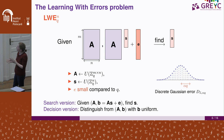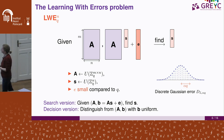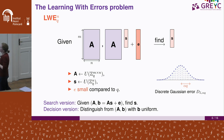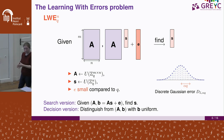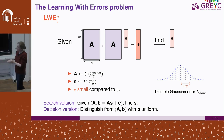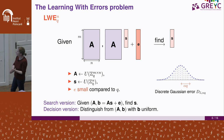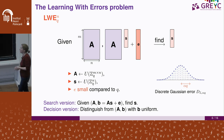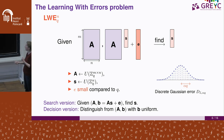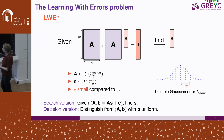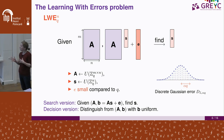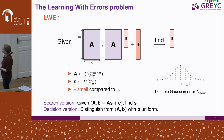There are two variants of this problem. The search version: given A and B = A·S + E, find the secret S. The decision version: given A and B, determine whether B = A·S + E for some secret S and error E, or whether B is itself uniform. These two versions are equivalent — there is an easy reduction from decision to search, and also a reduction from search to decision: if you can distinguish, you can find the secret.